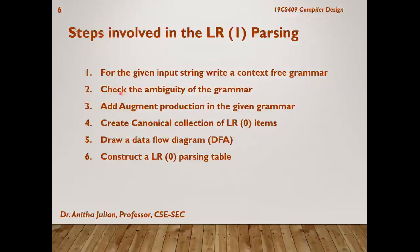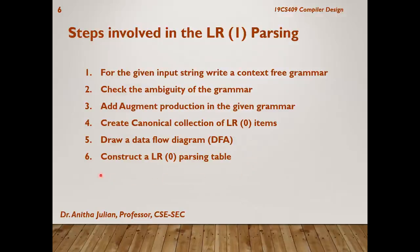The steps in LR parsing are: first, write the context-free grammar for the given input string; second, check whether the grammar is ambiguous and remove ambiguity if needed; third, obtain the augmented production; fourth, create a canonical collection of LR items and draw the DFA; and finally, construct the parsing table. We will assume the grammar is already given and ambiguity has been removed, so we will focus our discussion on steps three, four, five, and six.